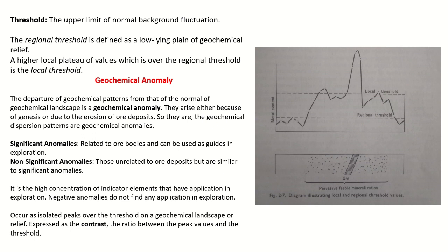A geochemical anomaly is defined as the departure of geochemical patterns from that of the normal geochemical landscape. The geochemical landscape is a reflection of the geological units, which can consist of unmineralized or mineralized rock. Unmineralized rock would have one pattern and mineralized rocks would have a different pattern. So it is the departure of those geochemical patterns from the pattern seen in normal unmineralized rocks — the background — that constitutes a geochemical anomaly.